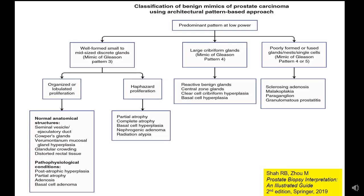A useful method to classify the benign mimickers of prostate cancer is based on architectural pattern. Based on this, the benign mimickers can be divided into those which mimic low-grade prostate cancer — essentially mimickers of Gleason pattern 3 — and high-grade benign mimickers which mimic Gleason pattern 4 and 5 prostate cancer. Well-formed glands typically constitute the majority of mimickers you are going to deal with, along with numerous anatomical variations and pathophysiological proliferative lesions.